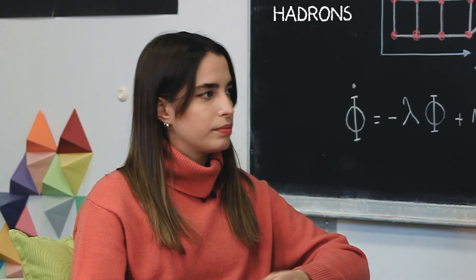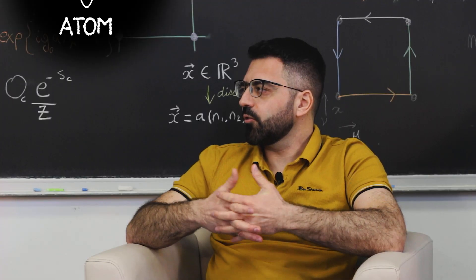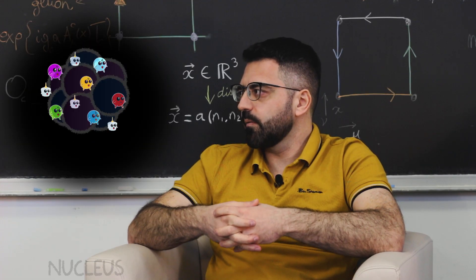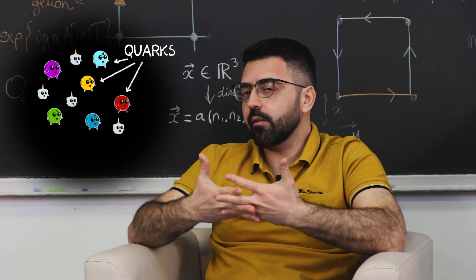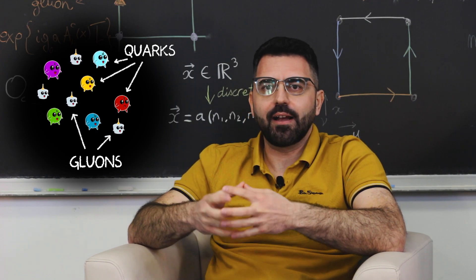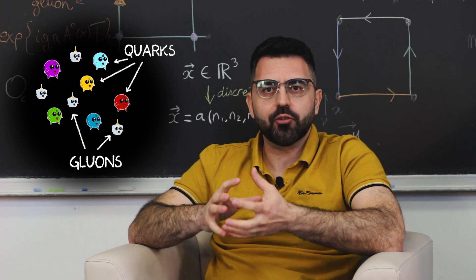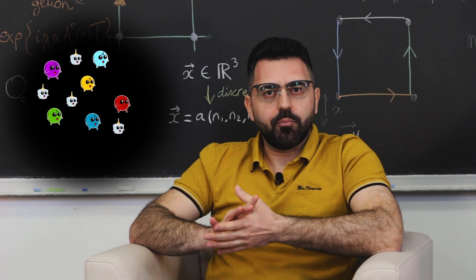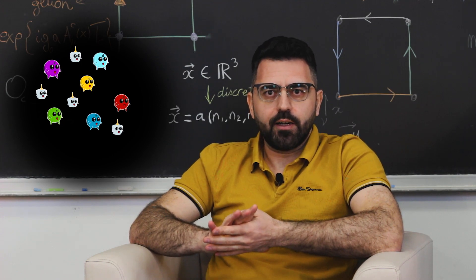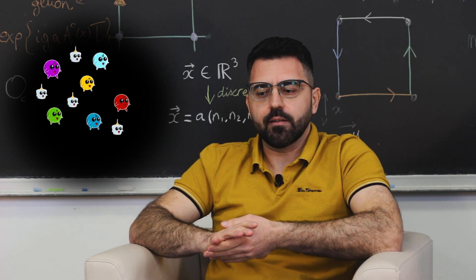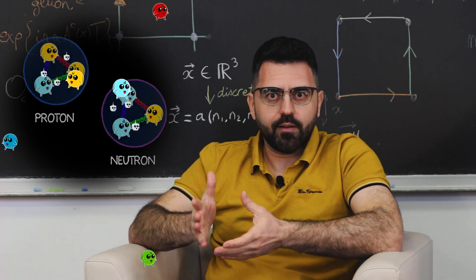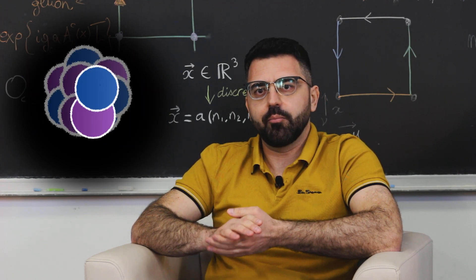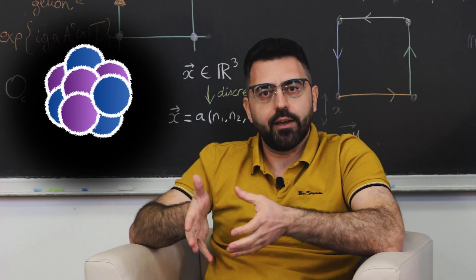What are these hadrons? Hadrons are subatomic particles made of quarks and gluons. These quarks and gluons are elementary particles held together by the strong force. Hadrons might sound like exotic particles, but in fact they are very common. Two very well-known examples of hadrons are protons and neutrons, which make up the nuclei of atoms.